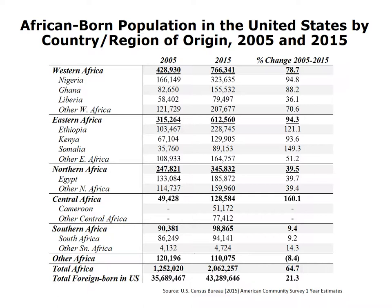Which countries do these African immigrants come from? Data from the American Community Survey shows that East and West Africa are the main source regions. West Africa is the source region of more than 766,000 African immigrants living in the United States, followed by East Africa with more than 612,000, North Africa with more than 345,000, Central Africa with more than 128,000, and Southern Africa with more than 98,000 individuals.